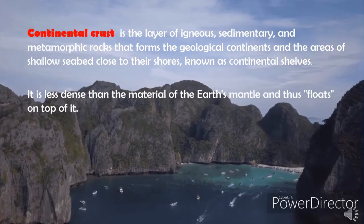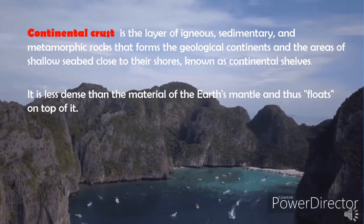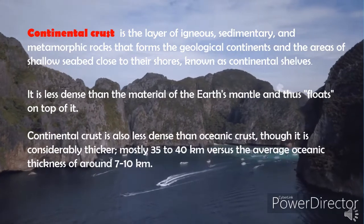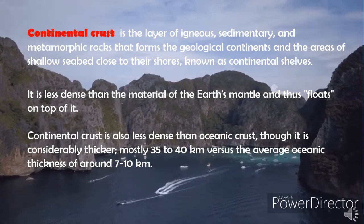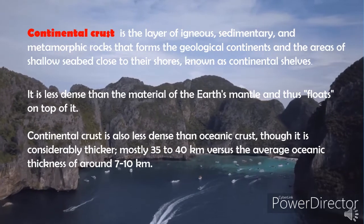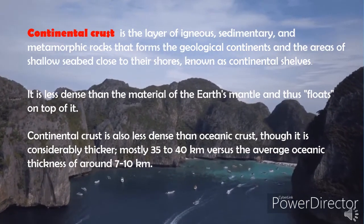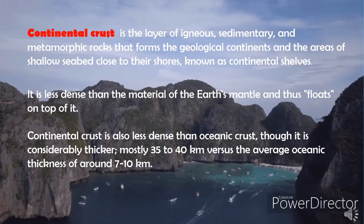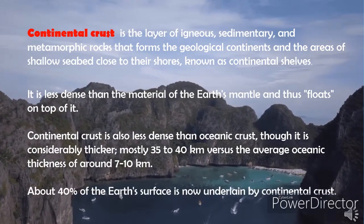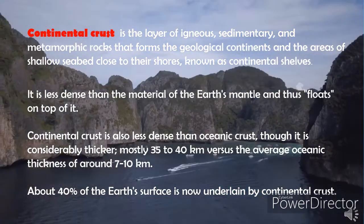Continental crust is the layer of igneous, sedimentary, and metamorphic rocks that form the geological continents and areas of shallow seabed close to their shores, known as continental shelves. It is less dense than the material of the Earth's mantle and thus floats on top of it. Continental crust is also less dense than oceanic crust, though considerably thicker — mostly 35 to 40 kilometers versus the average oceanic thickness of around 7 to 10 kilometers. About 40% of the Earth's surface is underlain by continental crust.